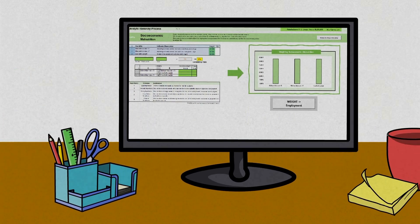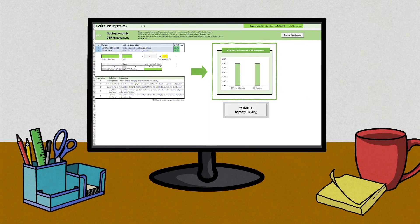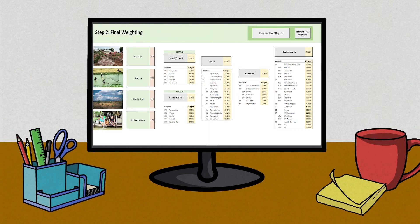Now you have to repeat this step for each criterion within each component of the model until we obtain a final list of weightings for rice fish suitability. The decision support tool does the rest for you.